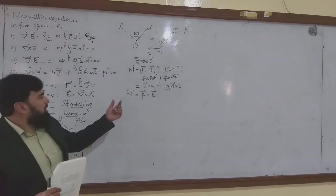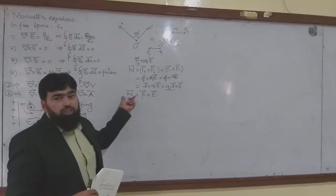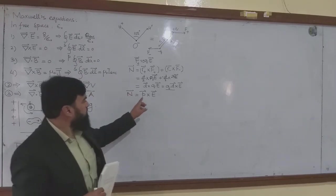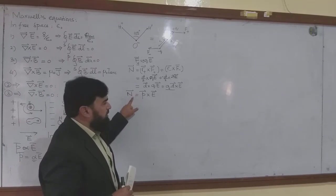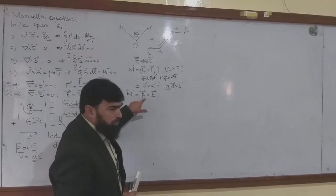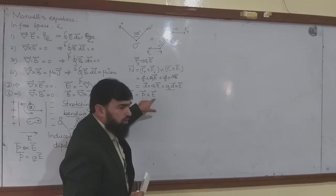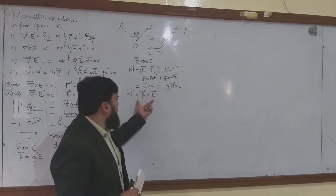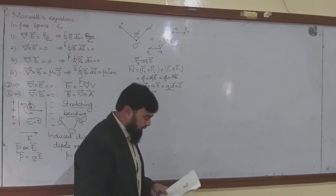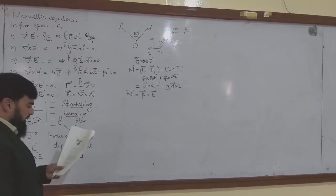Now in which direction will this torque act? From the basic definition of the cross product you can understand: the torque rotation will be perpendicular to P, perpendicular to E, and perpendicular to the plane of both of these. So we have our torque equal to P cross E.